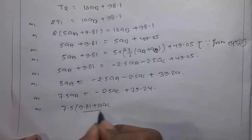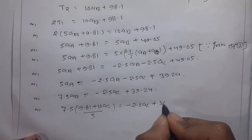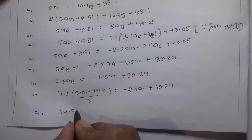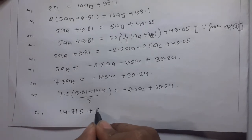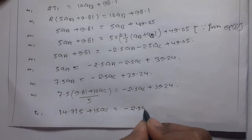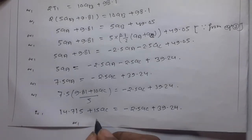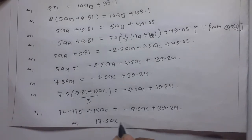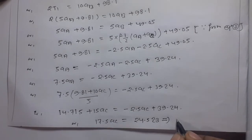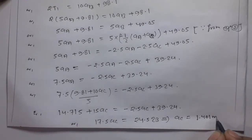Substituting AA from Equation 5 into 7.5AA = −2.5AC + 39.24: 7.5 × (9.81 + 10AC)/5 = −2.5AC + 39.24, so 14.715 + 15AC = −2.5AC + 39.24, giving 17.5AC = 24.525, therefore AC = 1.401 m/s² (upward direction).